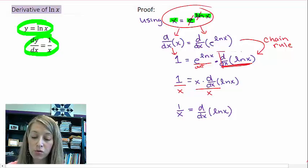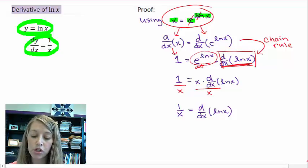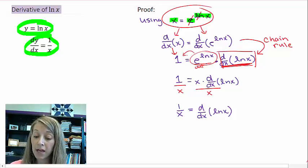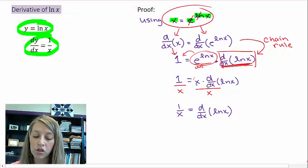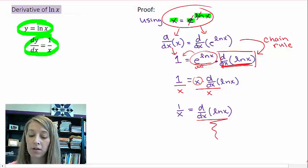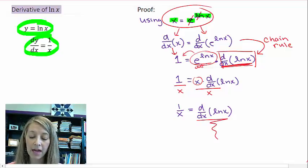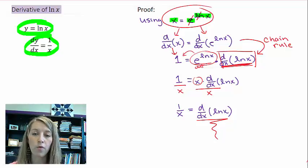If I'm trying to solve for this, then I must move this portion over to the other side by dividing by it. Well, e to the natural log cancels out, so this is just x. I divide by x on both sides, and that solves for what I am looking for: the derivative of natural log of x is equal to 1 over x.